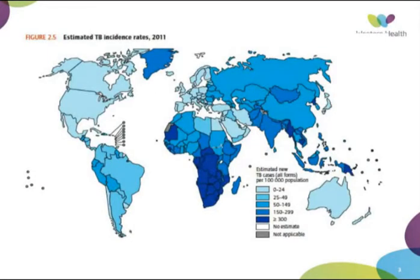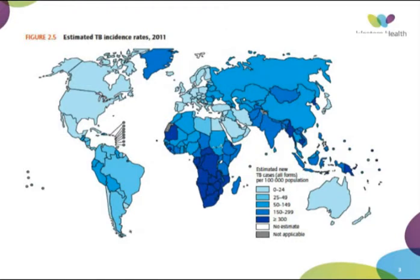This slide shows incidence rates from that WHO report — the most current data is from 2011. In Australia we're relatively spared, but in Sub-Saharan Africa, Southeast Asia, and India there are very high prevalence rates. We just have to be very cautious when dealing with people that have come from these countries, particularly given the increasing number of migrants and refugees we see.